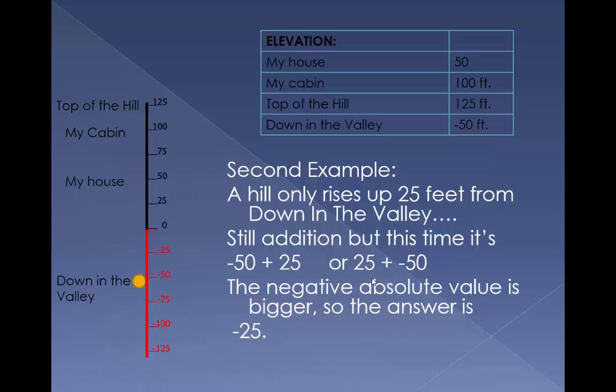The negative absolute value is bigger, though, so the answer is negative 25. See? We went up 25, we're still below zero.